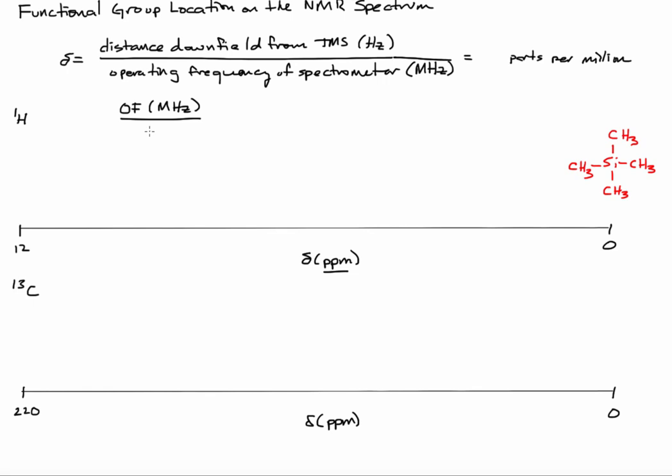So typical earlier instruments ran at 60 megahertz. Then they got a little faster to 90 megahertz. All the way up to 300. And what we have here in the Department of Chemistry and Biochemistry at USM is a 400 megahertz instrument.